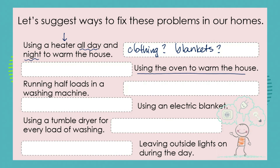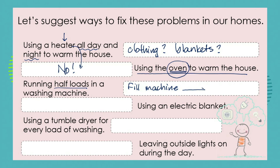What about using the oven to warm the house? The oven is going to consume a great deal of energy. We need to use proper heaters that are designed to warm the house and not put on the oven to make the house warm. Running half loads in a washing machine — we need to fill the washing machine because that is what it was designed to do. It was designed for full loads, and we're going to use, let's say, an hour's worth of electricity to do half a load. But if we do a whole load we will still use that same amount of time. So we need to think about how we use our appliances.